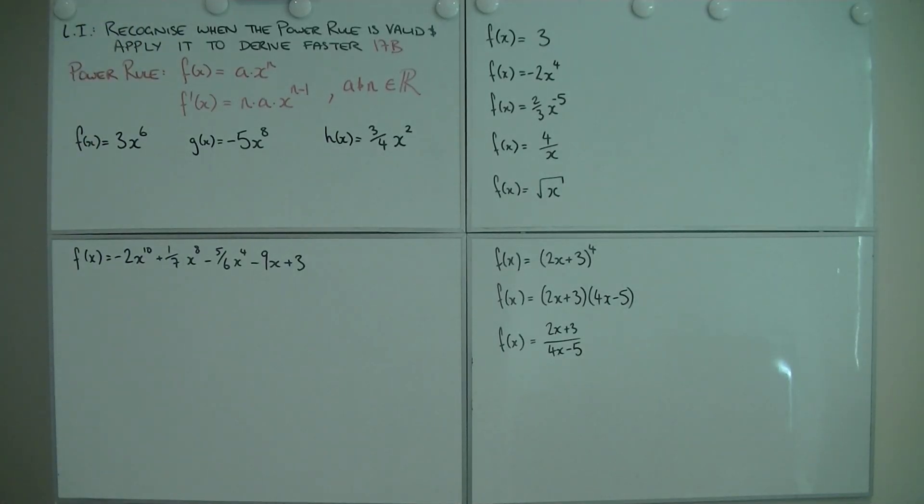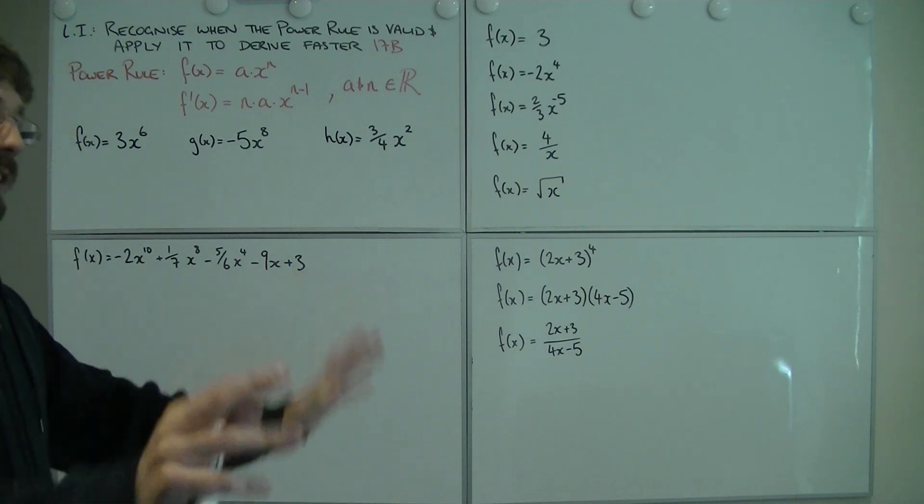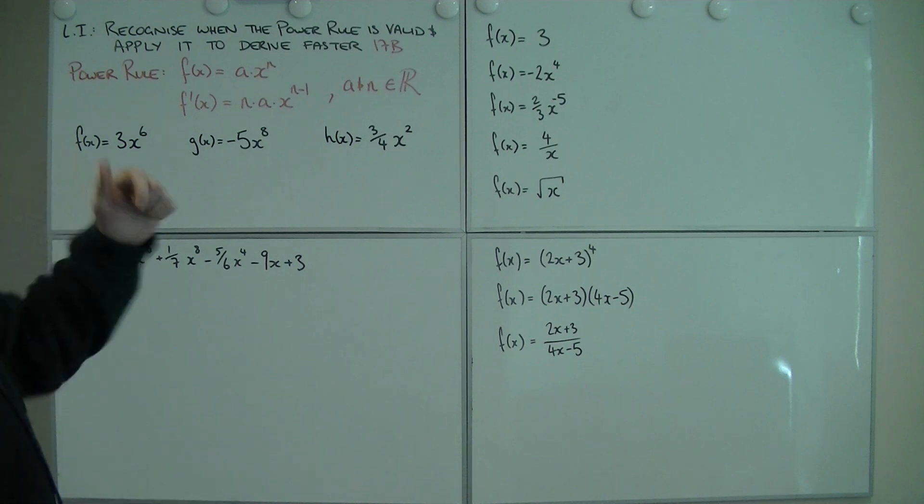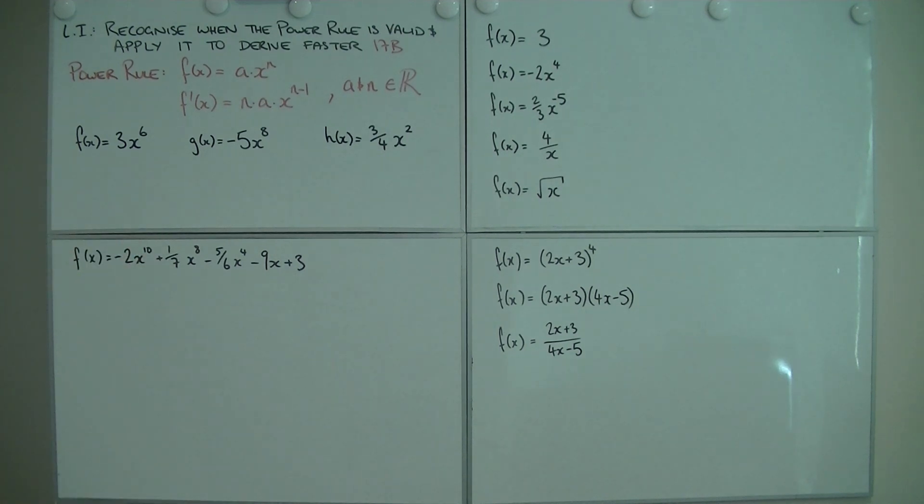Recognize when the power rule is valid and apply it to derive faster. Last time we were deriving using first principles. That sucks. It takes forever. No one wants to do that if they can avoid it. So there's quicker ways of doing things, but with great power comes great responsibility.